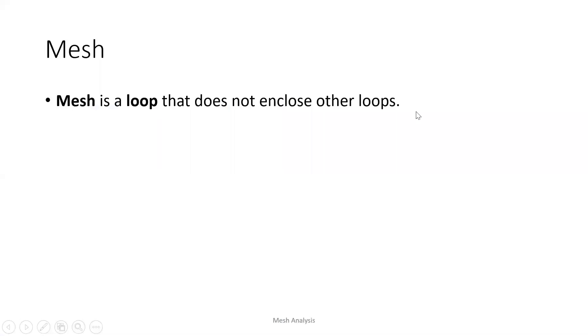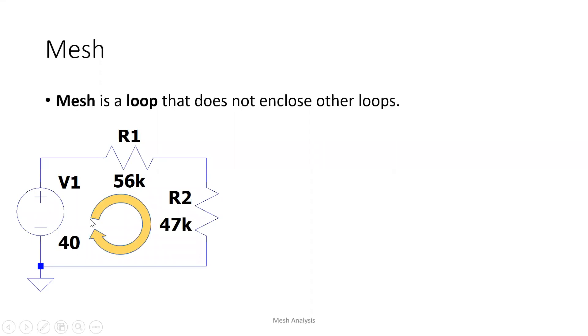Okay, so going back to mesh. So it is a loop which is not enclosed inside another loop. So for example, we have this illustration. Okay, if our current flows from 40 volts and back to 40 volts, then we have a closed loop.